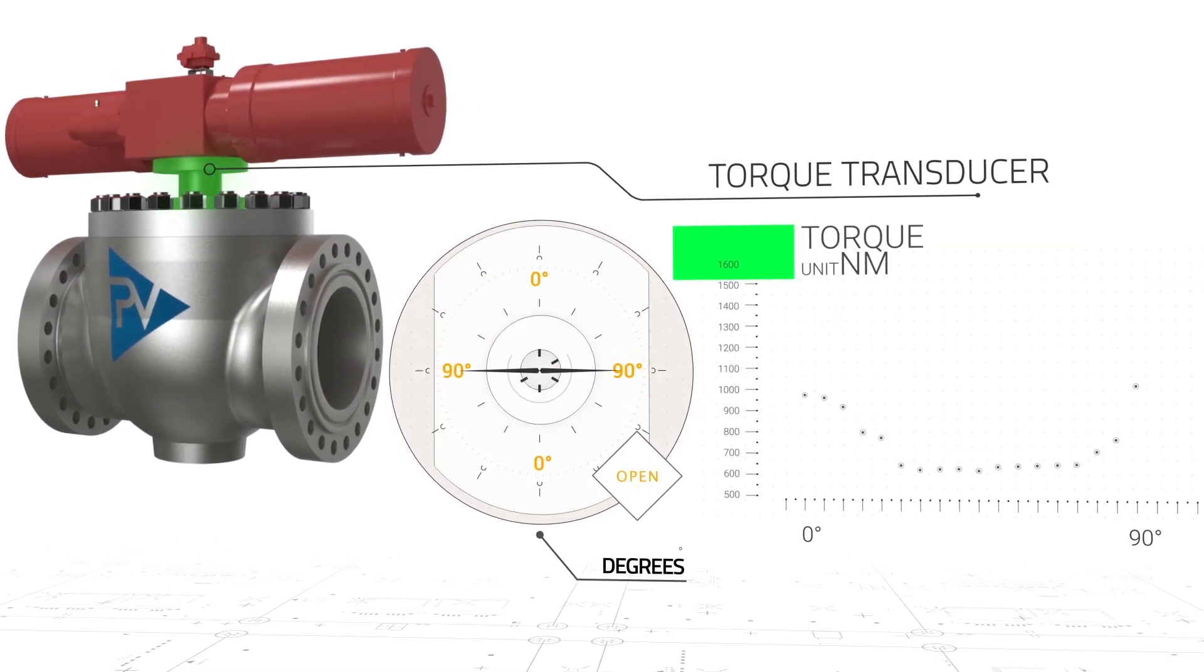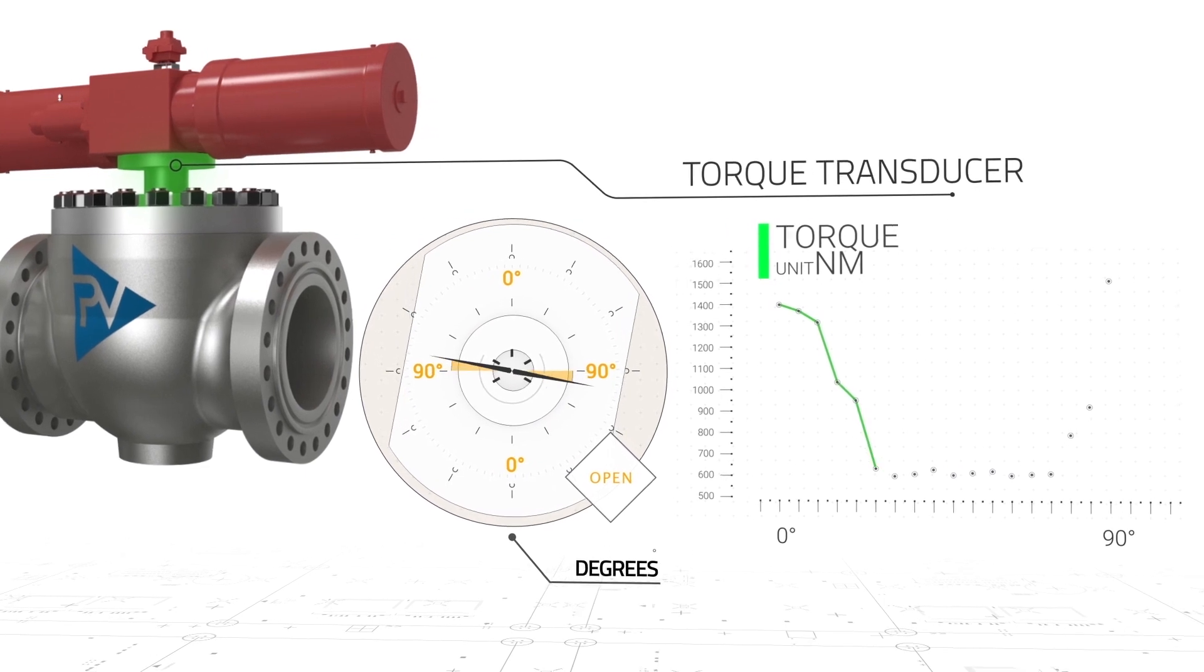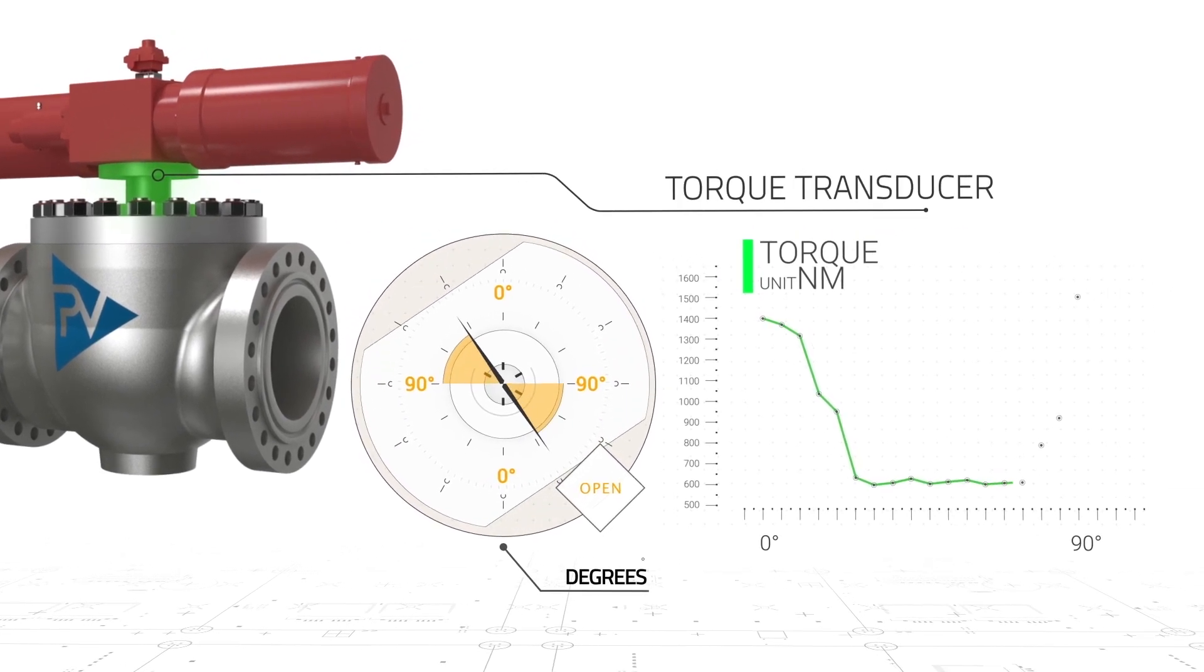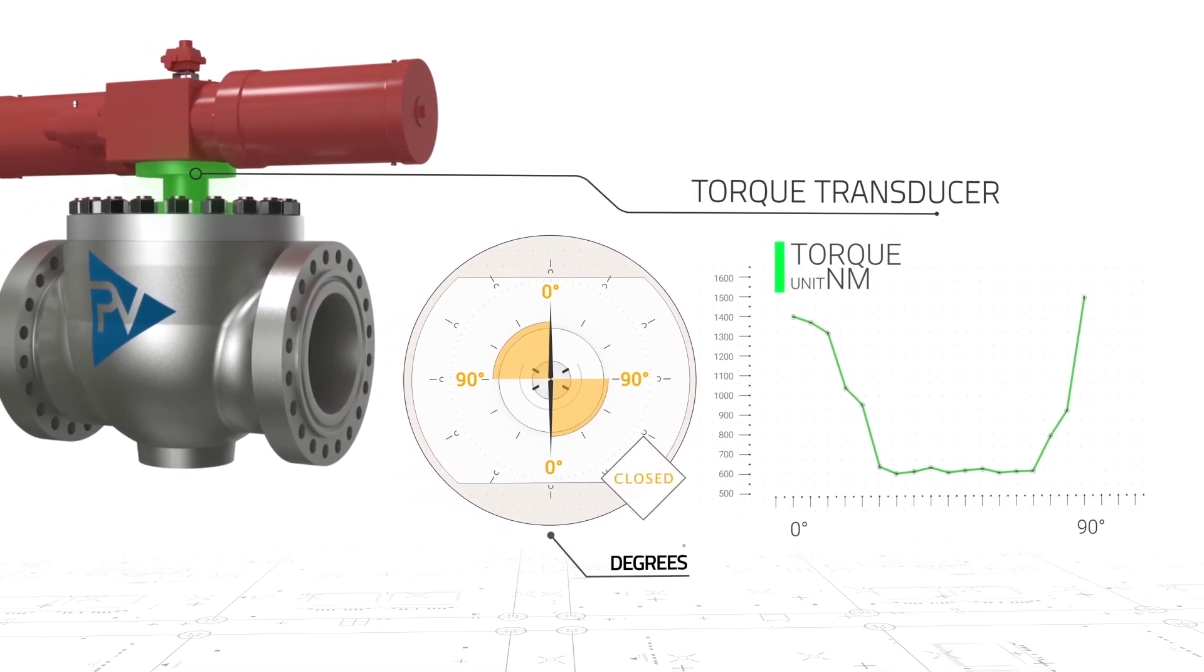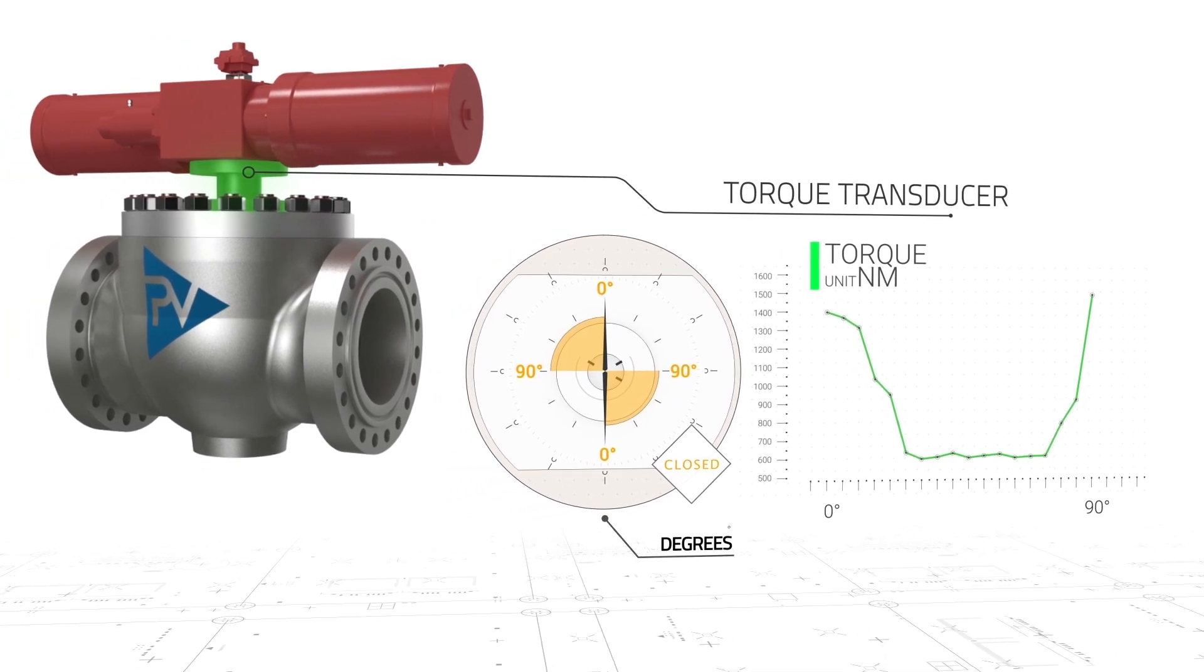Monitoring of torque on valve stem by means of load cell. The system is composed of a load cell installed on the valve stem and position transmitters, connected to the data acquisition and transferring system.